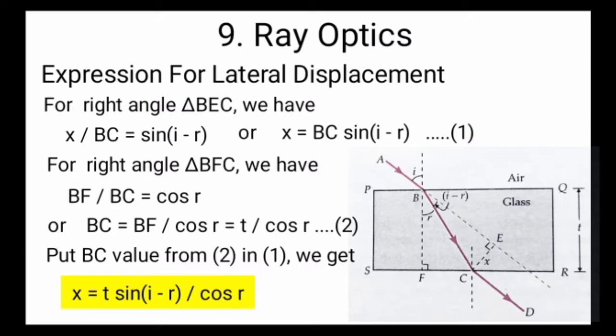For right angle triangle BEC, we have sin(i - r) equals x upon BC, or x equals BC times sin(i - r). This is equation number 1.